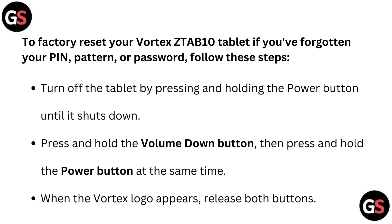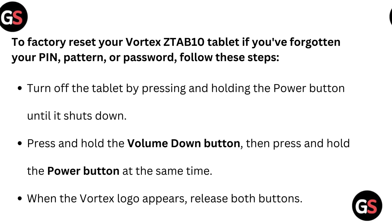To factory reset your Vortex ZT-AB10 tablet if you have forgotten your PIN, pattern, or password, follow these steps. Turn off the tablet by pressing and holding the power button until it's shut down. Press and hold the volume down button, then press and hold the power button at the same time. When the Vortex logo appears, release both buttons.